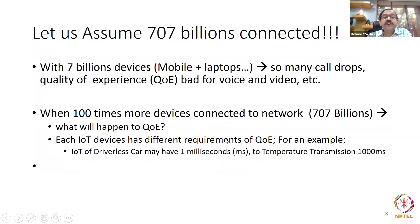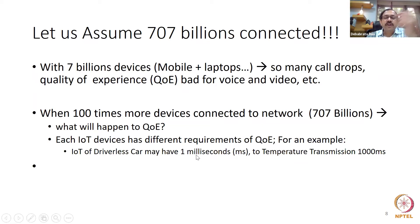Each IoT device has a different QoS requirement. A driverless car IoT may need a one millisecond response — if a child runs in front of the car while playing ball, the car must brake instantly. Temperature transmission: a thousand milliseconds is fine. So one millisecond to thousand millisecond is a 1000× difference in quality of experience requirement.